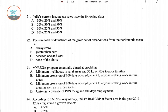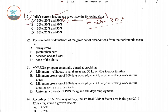In question number 71, it is asked which of the following represents India's current income tax rates slabs. The options include combinations like 0, 10, 20, 30 or 20, 30, 50, etc. Option A is the right answer — India's current income tax rate slabs are 10%, 20%, and 30%. For question number 71, option A is the right answer.